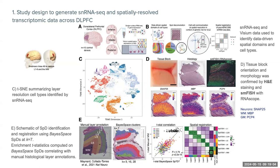Layer one maps to spatial domain one with a very high confidence rate. Layers two and three were a bit more difficult to identify at this resolution. Layers five and six also show high confidence scores, with white matter being the best described. Overall, most layers were assigned to the expected spatial domain, confirming the validity of the spatial registration methodology.